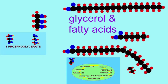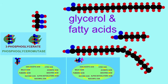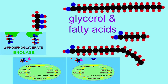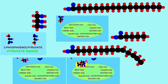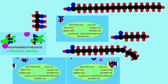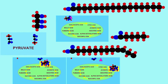And fatty acids can undergo a process known as beta-oxidation in which two carbon atoms are removed at a time. These can be converted into acetyl coenzyme A and enter the Krebs cycle.